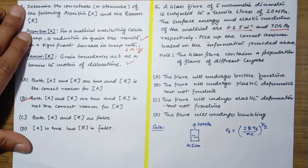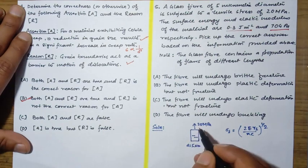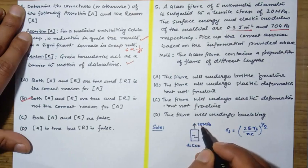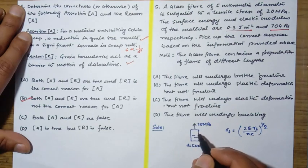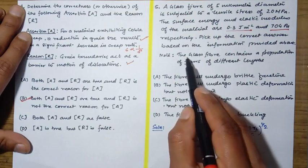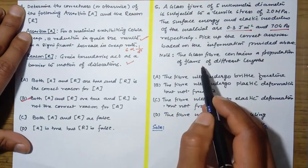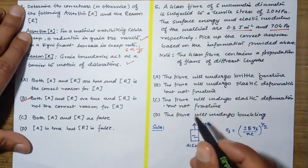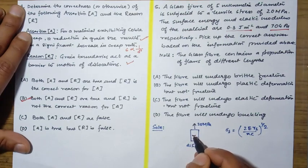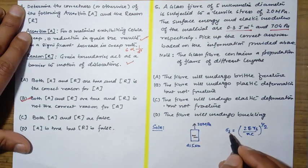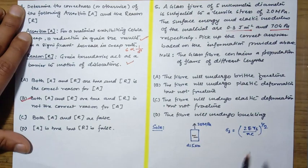This question is little bit tricky. Here we have been given that there is a fiber of 5 micrometer diameter subjected to a tensile load of 20 MPa. In the assumption part, the glass fiber contains population of flaws of different lengths, so these are the flaws. According to Griffith theory, this is the equation: sigma_f equal to 2 gamma_s E by pi c to the power half.